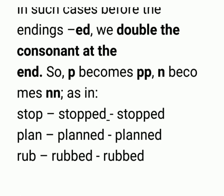Next है plan — P-L-A-N. Last consonant हमारा 'N' है, और उससे पहले 'A' है जो vowel है। Vowel के बाद consonant है, तो consonant को double कर देंगे — planned, planned. वैसे ही rub — R-U-B. 'B' से पहले 'U' है जो vowel है, vowel के बाद consonant है, तो 'B' double हो जाएगा — rubbed, rubbed.